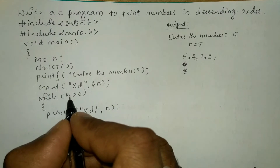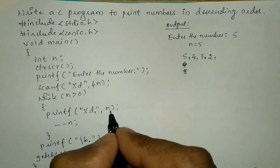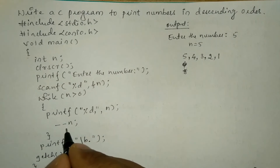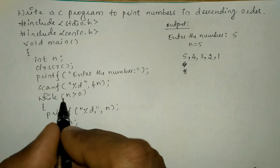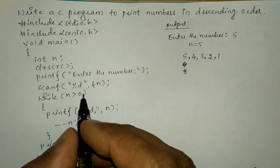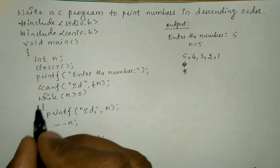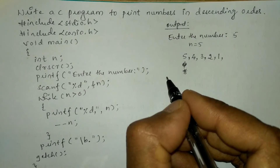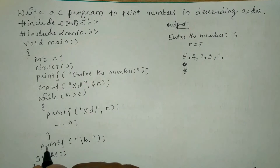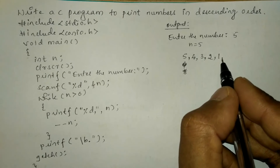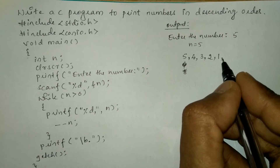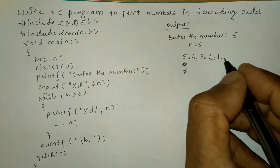Again control transfers to while: 1 is greater than 0, yes condition is true, then it is going to print 1. Now minus minus 1 is 0. Again control transfers to while: 0 is greater than 0 — no, condition fails. Once the condition fails, control comes out of the looping structure. Earlier it was printing a comma after each number, but because of the printf with backward slash b — which is an escape sequence that removes the last character after the iteration — it is going to remove that trailing comma and put a full stop instead.